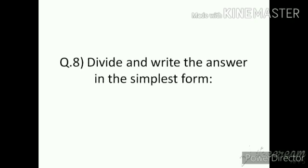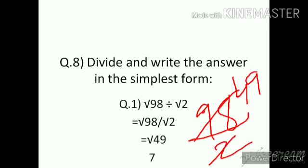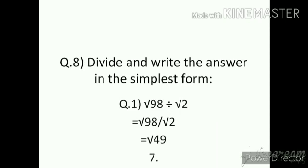Question number 8 — Divide and write the answer in simplest form. First: √98 ÷ √2. We write this as √98 upon √2 and divide 98 by 2. 98 ÷ 2 = 49. So the answer is √49 = 7.